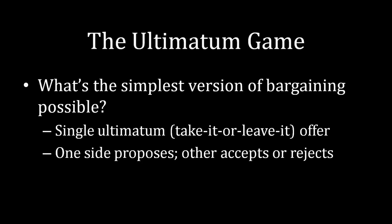The Ultimatum game is the simplest version of bargaining you can possibly write down. If you were challenged to write down the simplest version of bargaining possible, the best you could come up with is a single ultimatum, or a take-it-or-leave-it offer. One side makes a proposal to divide whatever they're negotiating over — for example, proposing a wage for a job. The other side sees that offer and either accepts it, settling on that amount, or rejects it, ending the interaction entirely with no further bargaining possible.